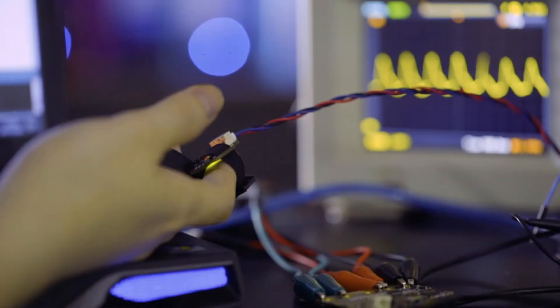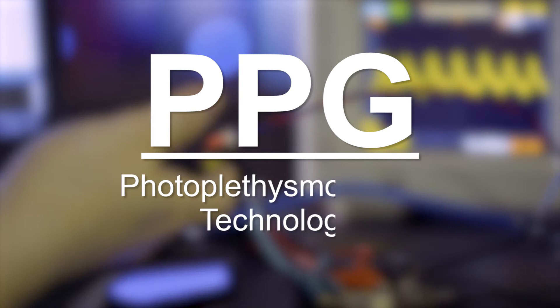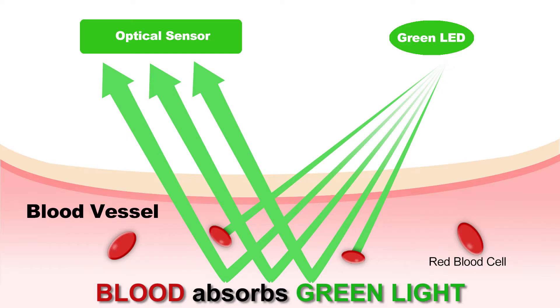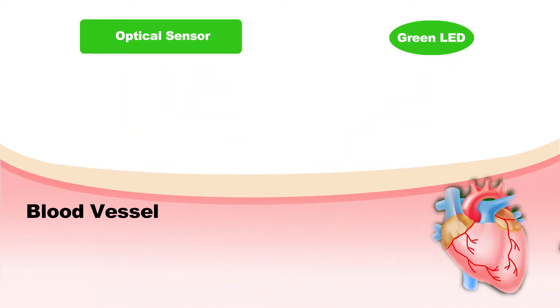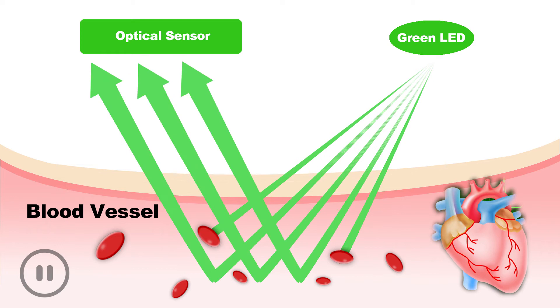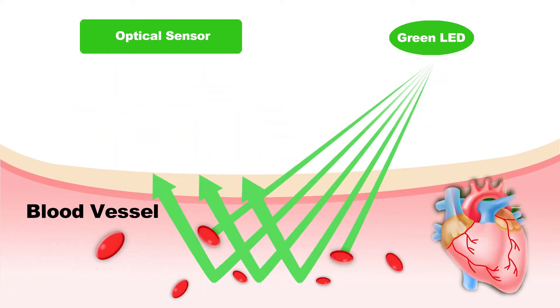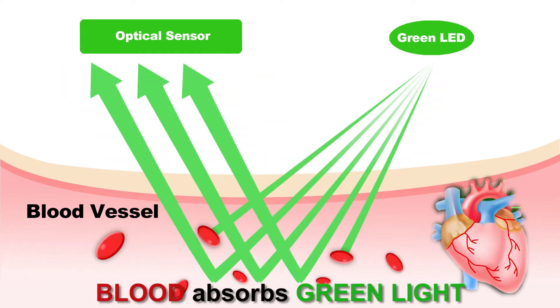The optical heart rate sensor is based on PPG photoplethismography technology, which may sound horrible to most of us. However, it is based on a very simple fact: blood absorbs green light. Each time our heart beats, it pumps a blood pulse into the vessel.